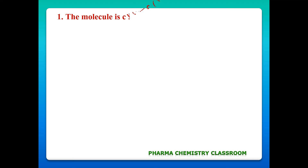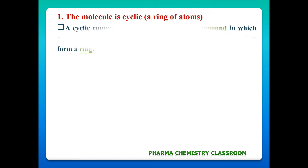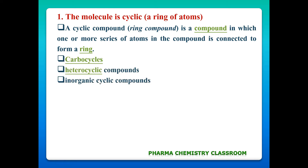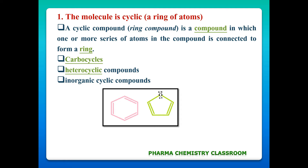First criteria: the molecule is cyclic in nature. A cyclic compound is a compound in which one or more series of atoms is connected to form a ring. There are three types: carbocyclic (the ring is made up of carbon atoms only), heterocyclic (the ring is made up of carbon and non-carbon atoms), and inorganic cyclic compounds. Benzene is an example of carbocyclic, while furan is an example of heterocyclic.